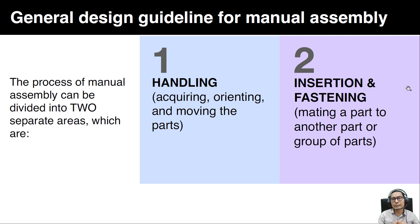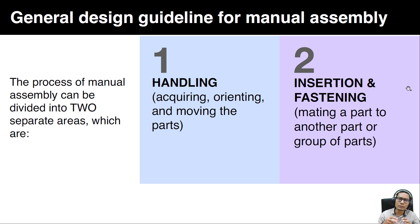The objective of this lecture is to cover the general design guidelines for manual assembly. The process of manual assembly can be divided into two separate areas: first is handling, and second is insertion and fastening. Handling involves acquiring, orienting, and moving the parts, while insertion and fastening is about mating a part to another part or group of parts.